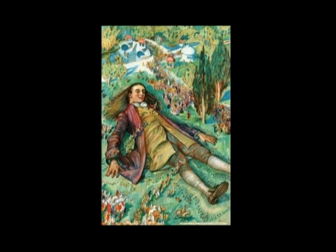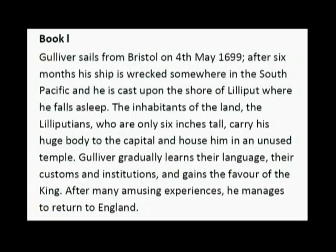In Book One, we see the protagonist Gulliver, who sails in 1699 towards the South Pacific but is cast upon the shore of an island called Lilliput. In Lilliput, the inhabitants are very, very small, and in comparison Gulliver is huge — he is a giant. And then he manages to return to England.